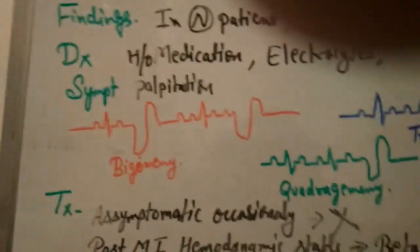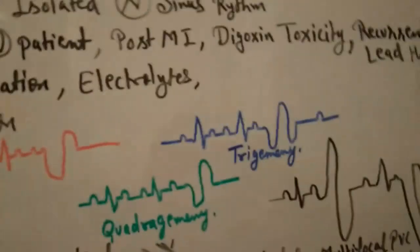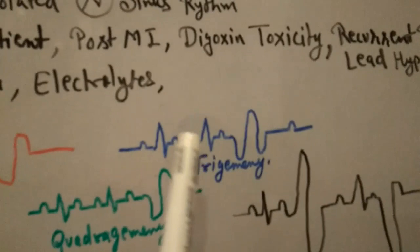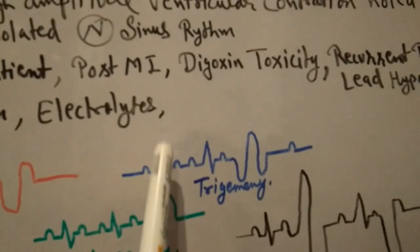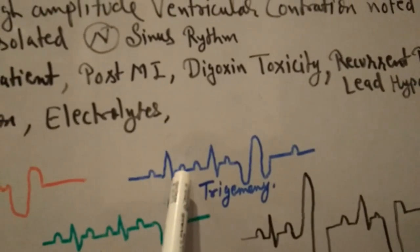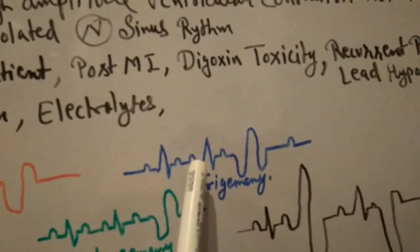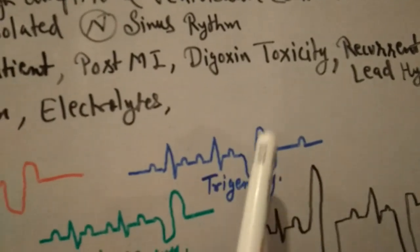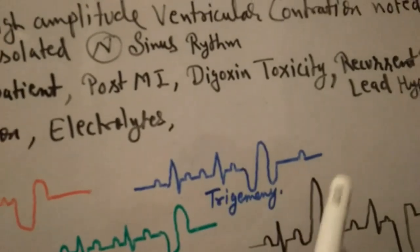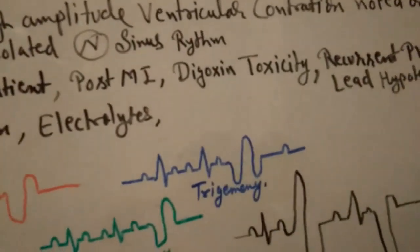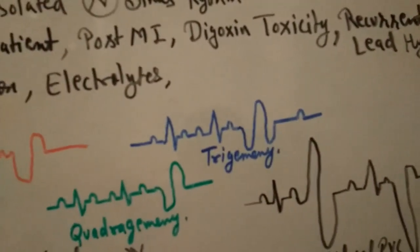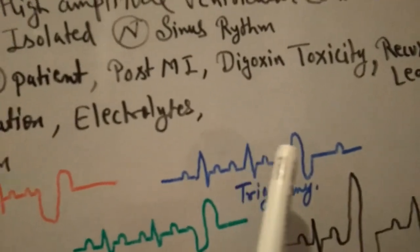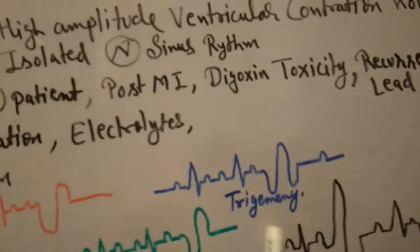In trigeminy, we see a normal PQRS complex, then a T wave, then another normal PQRS complex, and then a premature ventricular contraction — the pattern of 2 normal beats followed by 1 PVC repeating gives us trigeminy.